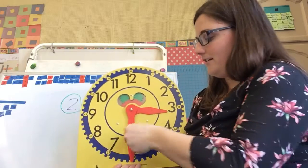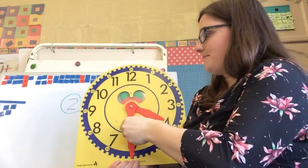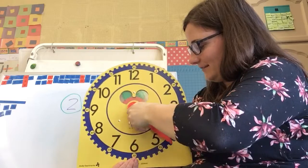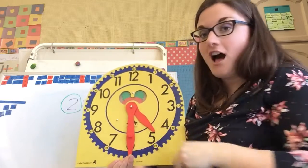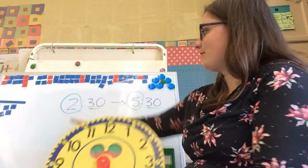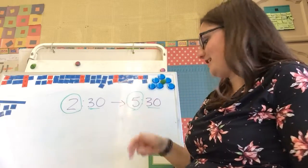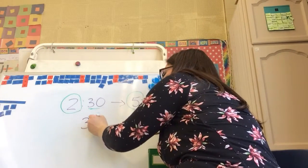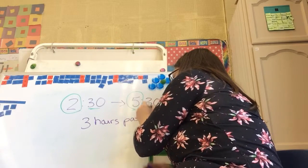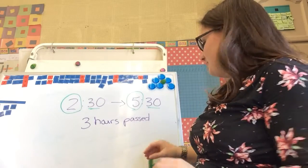3:30 is 1 hour, 4:30 is 2 hours, 5:30 is 3 hours. So we count from 2 to 5: 2:30, 3:30, 4:30, 5:30. So three hours, three hours passed.